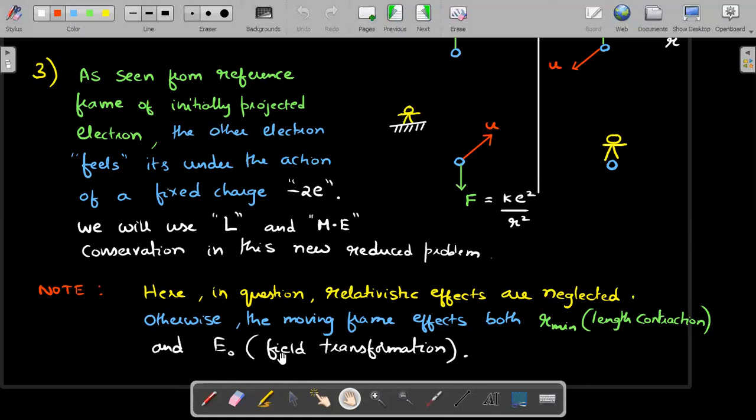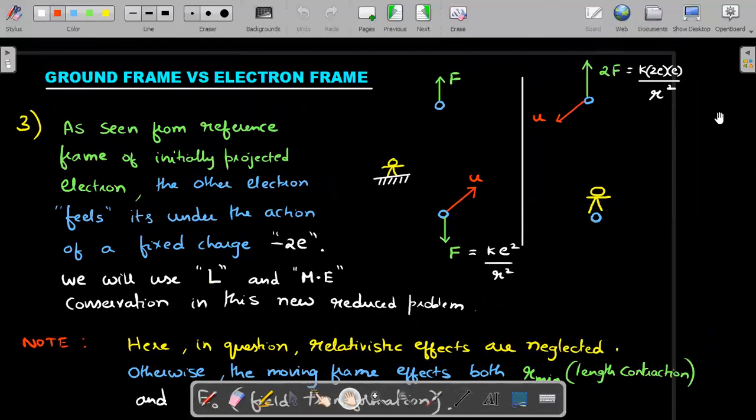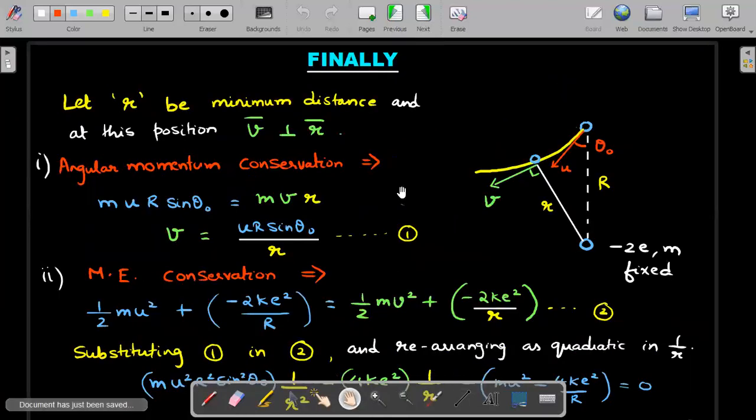Also, the field that was externally being ignored will also get transformed when you move in a particular frame. The E will get transformed to a new E and there could be a B that could obviously be present in the new frame. All these effects have been neglected because of the statement mentioned in the question.